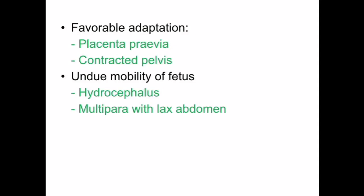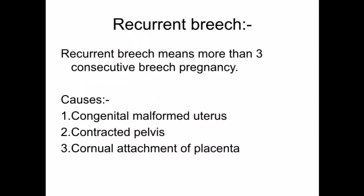Recurrent breech means three consecutive breech pregnancies. The causes are congenital malformed uterus, contracted pelvis, and cornual attachment of the placenta.